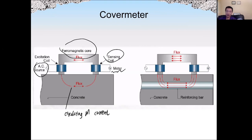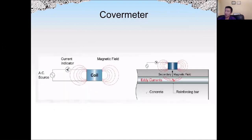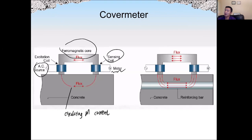If there is steel present, it generates a secondary magnetic field. As you can see, a secondary magnetic field will be generated if there is steel in the primary magnetic field. That will change the electrical current — known as eddy current. The change in eddy current can be detected by the sensing core.